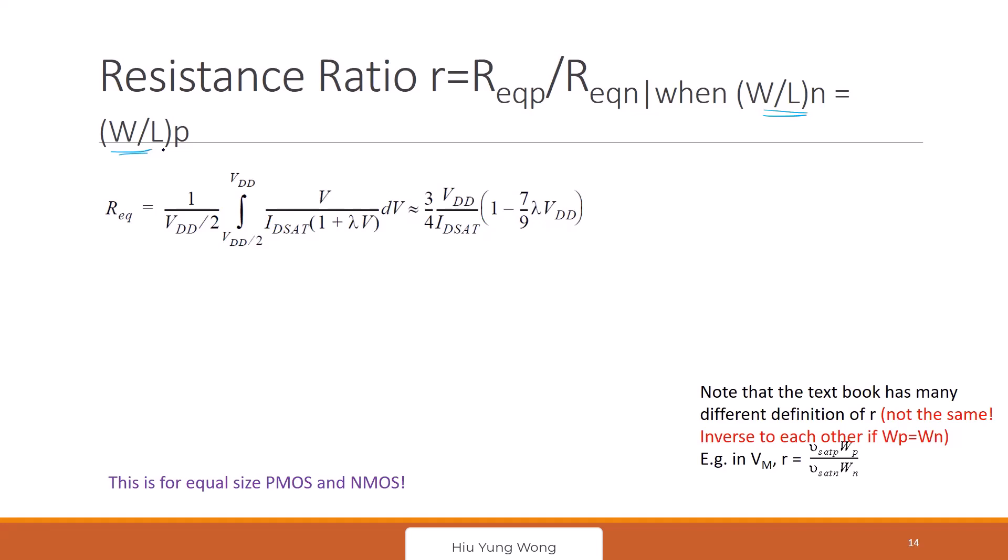Okay, so I have two transistors, N and P, but they have the same size. What are their equivalent resistance ratio? I call it R. So R equals to the equivalent P-resistant divided by the equivalent N-resistant.